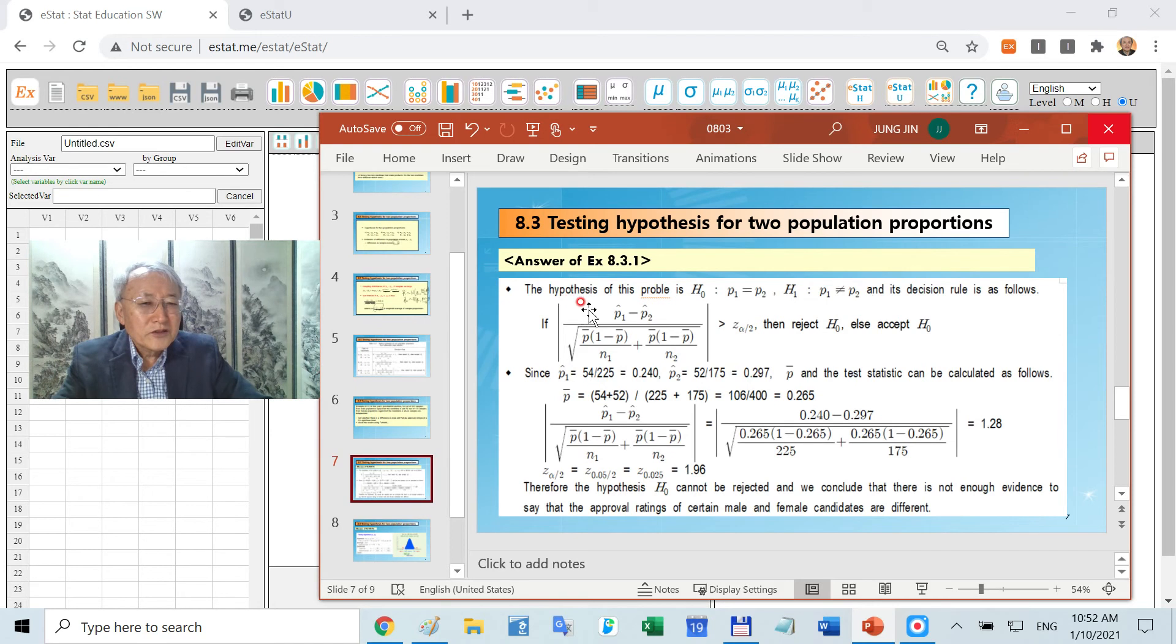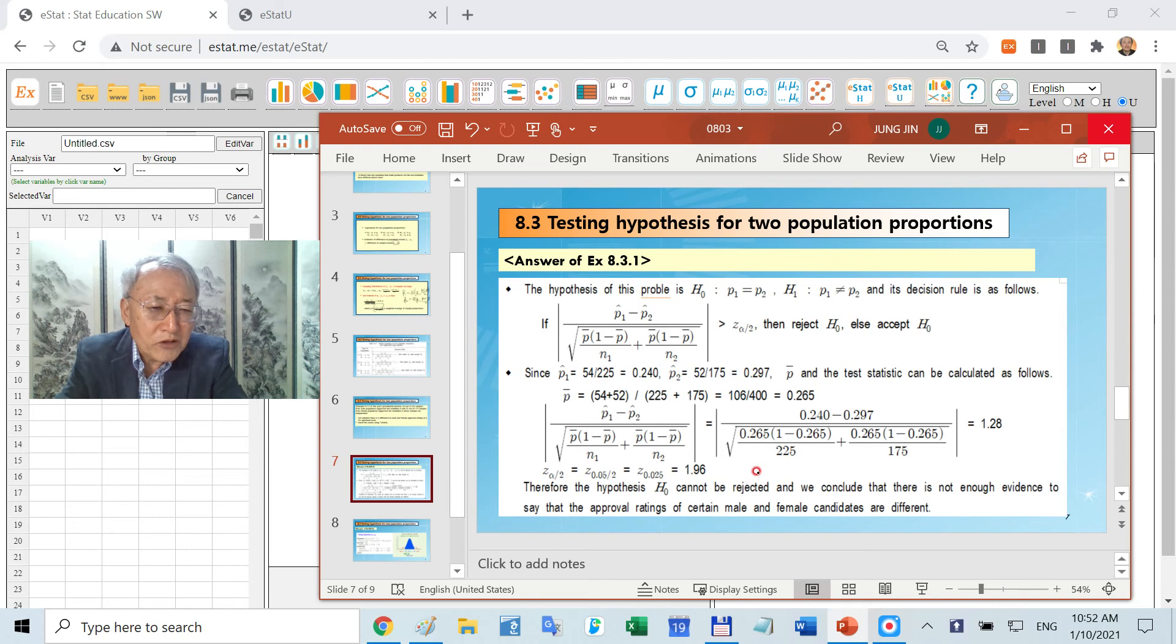The hypothesis is P1 equals P2 and P1 not equal to P2. Therefore, you need the two tail test. Therefore, absolute value is greater than some value. You need to calculate the sample proportion P1 hat, P2 hat, and then take weighted average. That is nothing but you add the whole sample, add the persons who favor the candidate A. It is overall 265. It is some kind of average of these two numbers, weighted average.